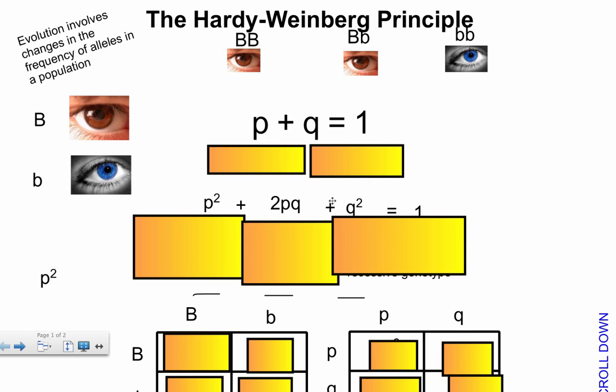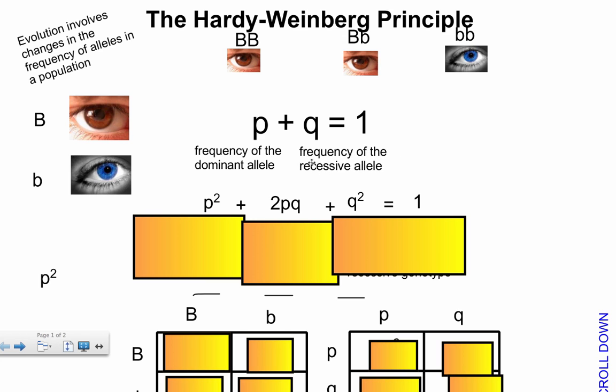And in this case, P and Q represent the dominant and recessive allele. So we're talking about a specific gene, two forms of that gene. P represents the frequency of the dominant allele, the total percentage of the alleles that are present that are actually the dominant form. And then Q represents the frequency of the recessive allele.